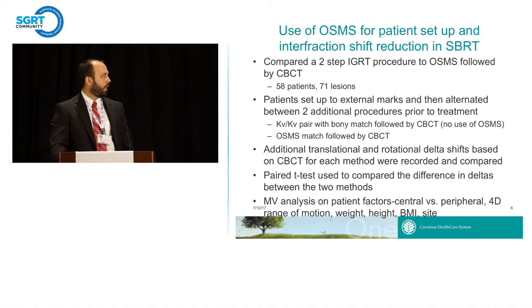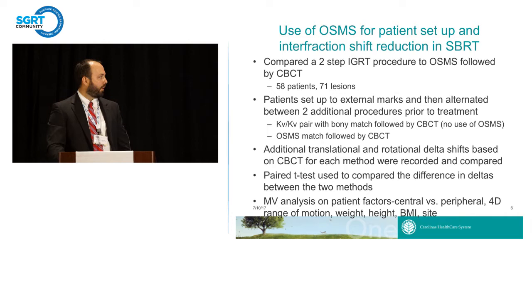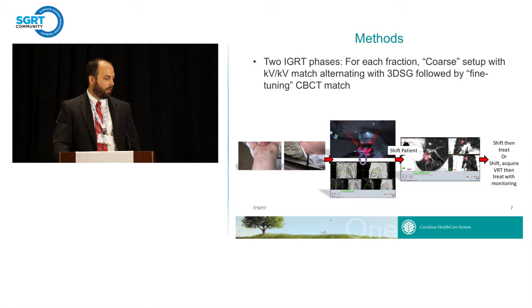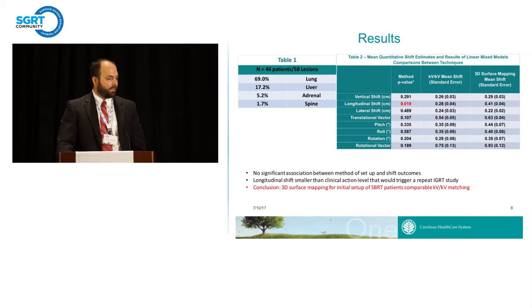When we integrated OSMS into SBRT we compared a two-step IGRT procedure to OSMS followed by cone beam CT. We presented this data at ASTRO last year based on 71 lesions in 58 patients and compared the shifts from cone beam CT for each technique. We also looked at patient factors, tumor position, and tumor motion to see if those affected what we were seeing. Our initial experiment alternated between further patient setup with either OSMS or KV-KV bony match, then proceeded to volumetric imaging with cone beam CT, recording all shifts.